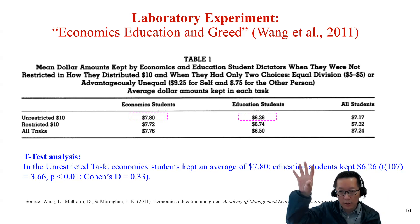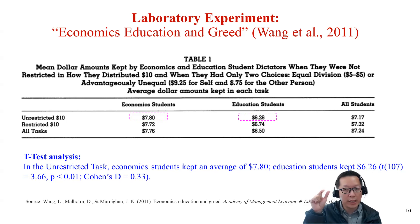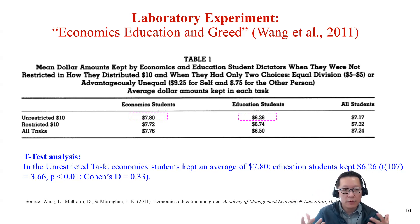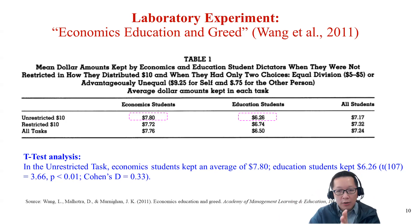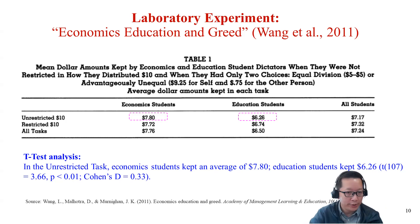They ran a t-test analysis to compare the groups. Economics students kept $7.80, education students kept $6.26. The t-statistic with 107 degrees of freedom (sample size minus 1) equals 3.66 — a result you can produce using SPSS or any software. It is significant with p less than 0.01 and an effect size (Cohen's d) of 0.33. This shows a significant difference in greed behavior between economics and education students. The students went into the lab and played the dictator game on a computer.